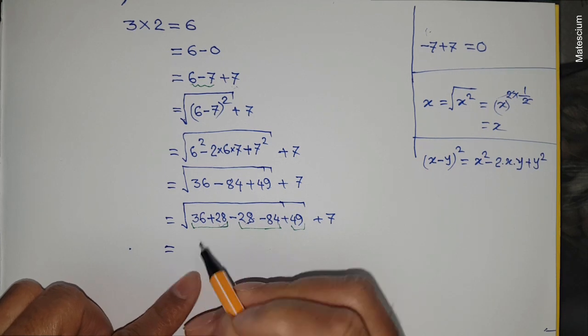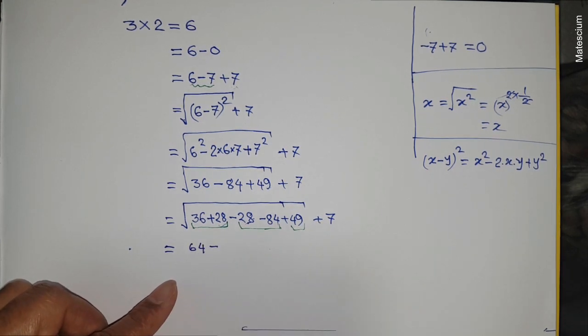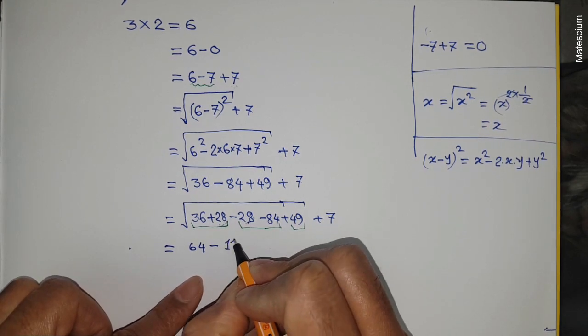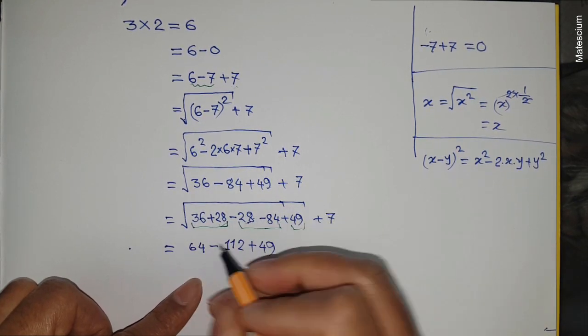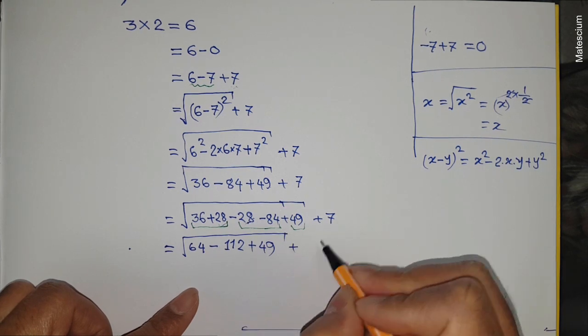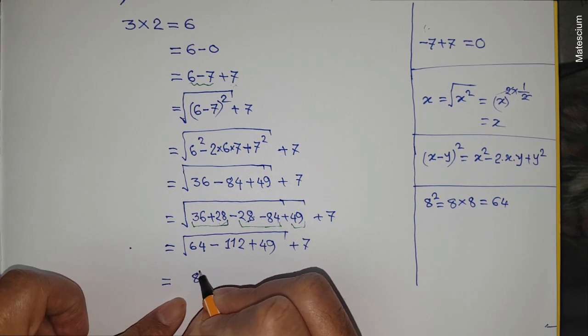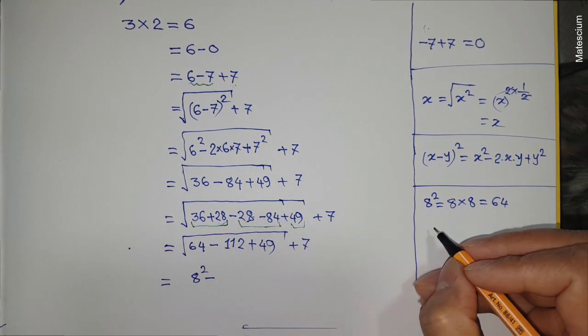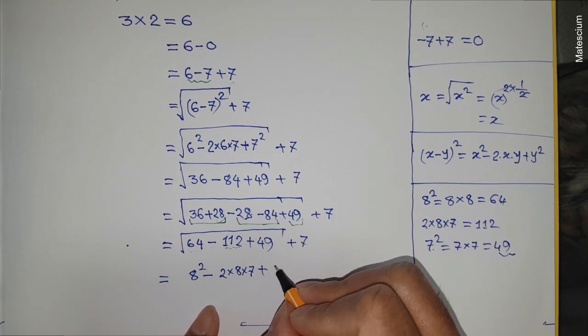So 36 plus 28 equals 64. 28 and 84, if you add them together, become 112 minus, and plus 49, and this square root remains over here plus this seven. This 64 can be rewritten as 8², minus 112 can be rewritten as 2×8×7 equals 112, plus 49 equals 7².